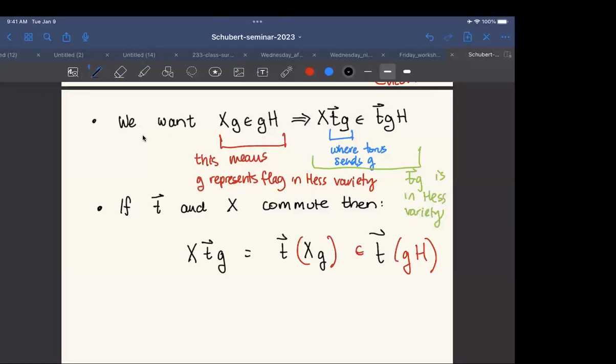And sort of getting back to Anders's question, so if T and X commute, then X TG is... So if that red part XG is in G of H, then this whole thing is going to be in TGH, which is what we want. And in general, this is sort of suggesting that we can start focusing on things like what happens when you take your matrix X and you start conjugating by a torus element. Sort of like a good place to start, let's say.